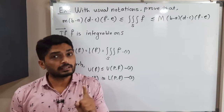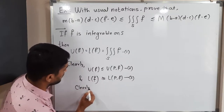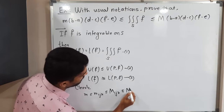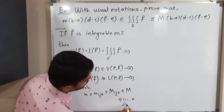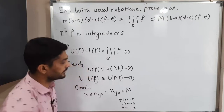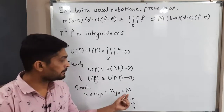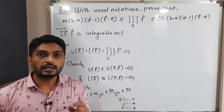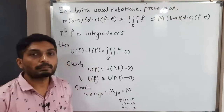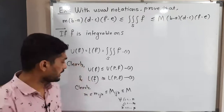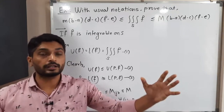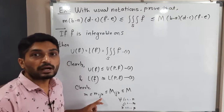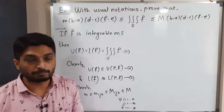We can also clearly write: small m ≤ m_ijk ≤ M_ijk ≤ capital M, for all i from 1 to n, j from 1 to m, k from 1 to p. In other words: this is the global minimum, m_ijk is the local minimum, M_ijk is the local maximum, and capital M is the global maximum — so obviously they satisfy this ordering.